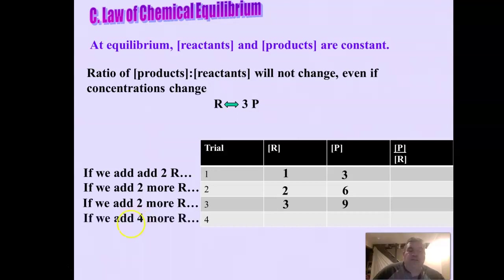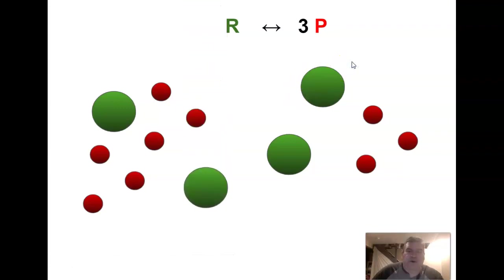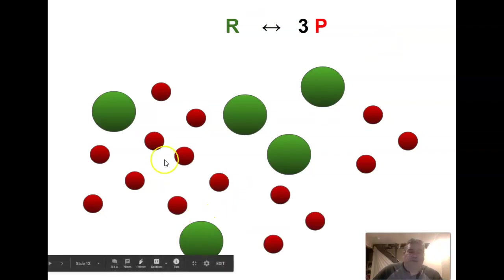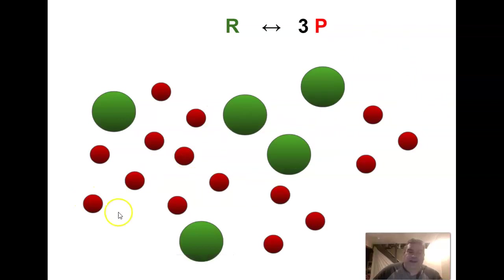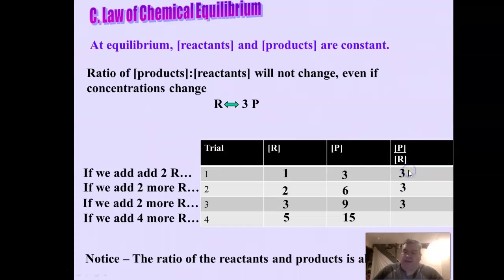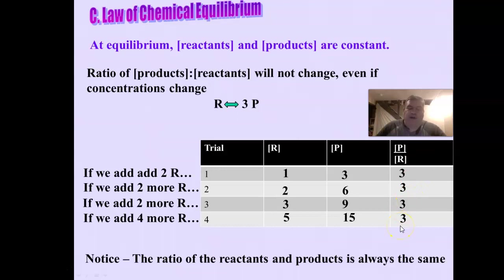Now we add four more reactants to the three-to-nine ratio. Too many reactants shift to the product side, and we end up at a five-to-fifteen ratio. Adding more reactants causes the equilibrium to shift to this new point. If you divide the amount of products by the amount of reactants across all trials, you always get the same number — the ratio of products to reactants is always the same. It always shifts until it gets back to that original ratio.